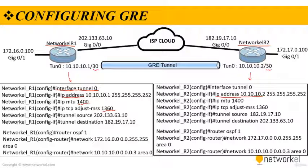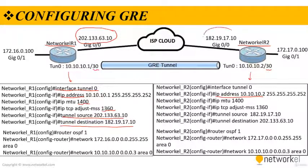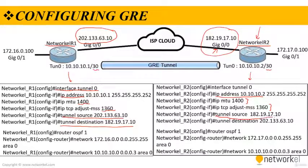Then we define a tunnel source IP address — that's the IP address of the local interface. The tunnel destination is the IP address of the remote router's GigabitEthernet 0/0 interface. The same MTU and MSS values are configured on R2, where the tunnel source is GigabitEthernet 0/0 of router 2 and the destination is the GigabitEthernet 0/0 of router 1.